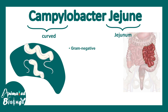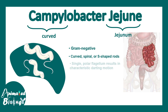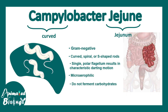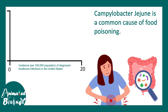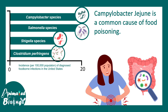Campylobacter jejuni is a gram-negative, curved S-shaped rod. They have a single polar flagellum which helps them perform a characteristic dart-like motion, and they are microaerophilic. They do not ferment carbohydrates and can be cultured on selective medium. Campylobacter jejuni is one of the most common causes of food poisoning, along with Salmonella, Shigella, and Clostridium perfringens.